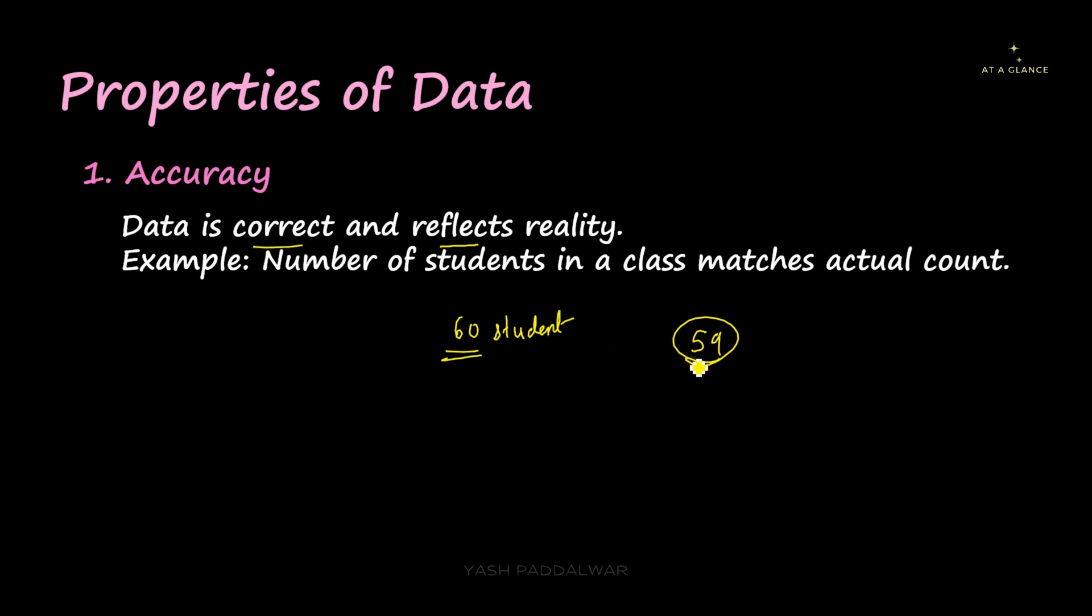Whenever we deal with data science related problems, we must ensure that the data that we are going to use must be accurate. Even if a slight change in the accuracy of data happens, the entire solution that will be created won't be fully correct. So that is why accuracy is the most important property of data. Data has to be accurate.